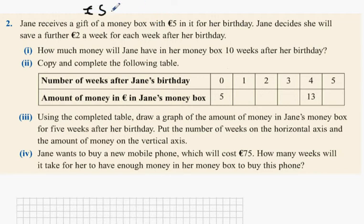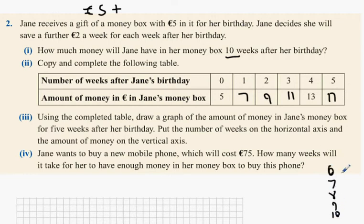And how many times do we have to add on two? Ten times. It's like a sequence, isn't it? So it goes up: seven, nine, eleven... now you could keep counting up — six, seven, eight, nine, ten — and you could go nineteen, twenty-one, twenty-three, twenty-five, twenty-seven. But you can't double it because you start off with five.